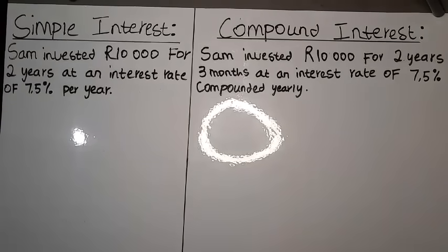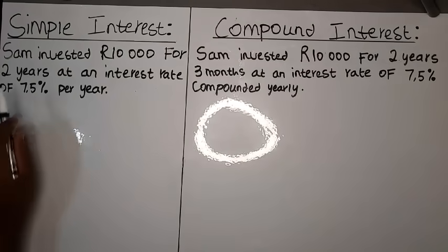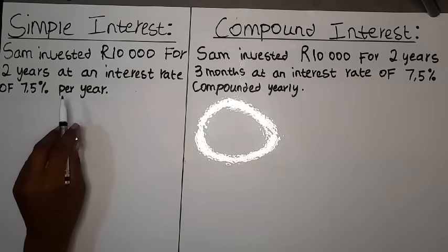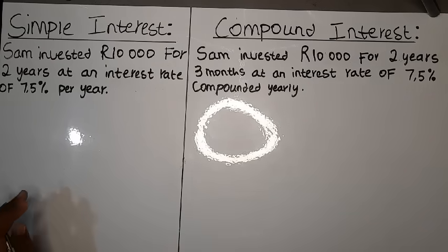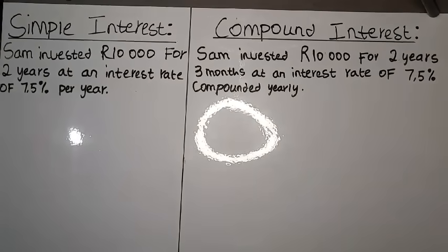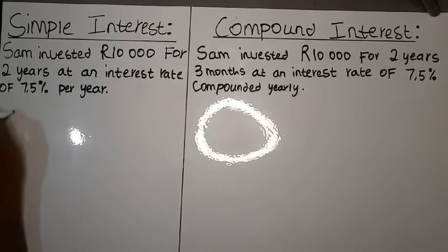The scenario given for simple interest says that Sam invested 10,000 grants for two years at an interest rate of 7.5 percent per year. The first thing we have to do is calculate what 7.5 percent of the amount Sam invested is.